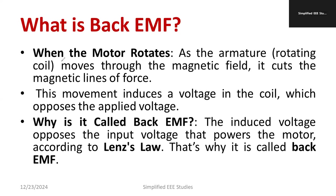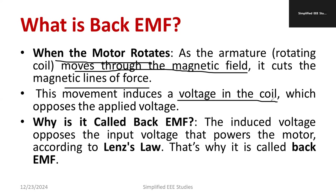See the rotor. Whenever the motor is getting rotated, the armature coil moves through the magnetic field. It cuts the magnetic lines of force. Because of that, a voltage is induced in the coil which will be entirely opposite to the applied voltage. That means back EMF, Eb, will be in one direction, while the applied voltage will be in the other direction. Both are opposite.